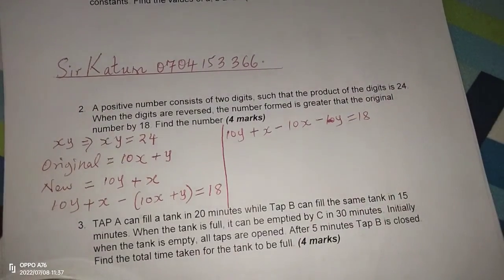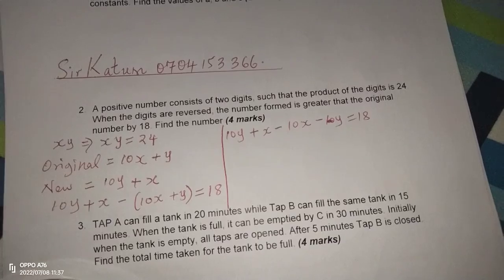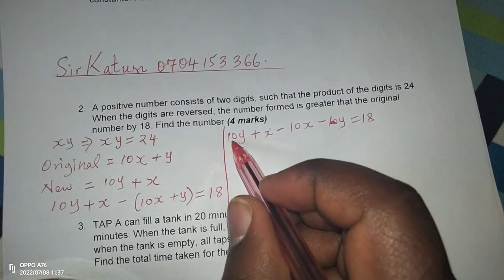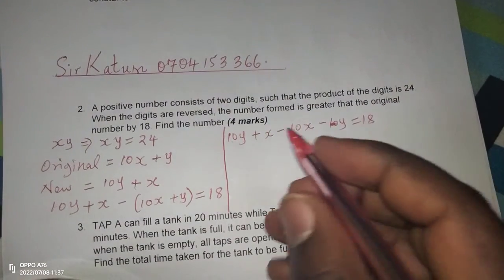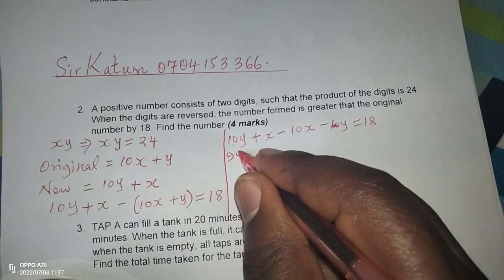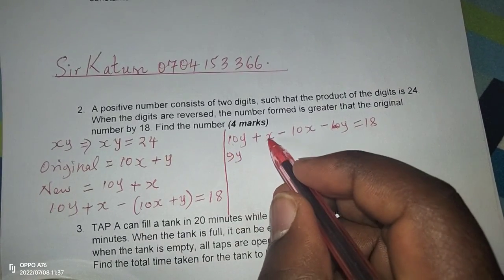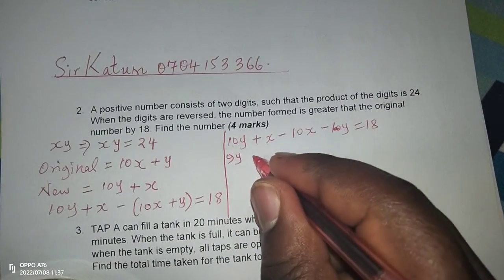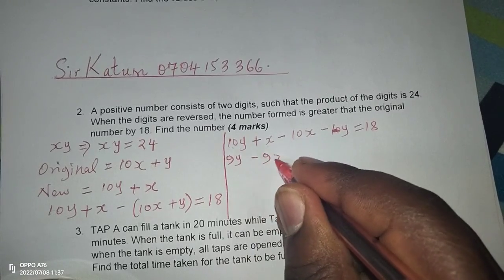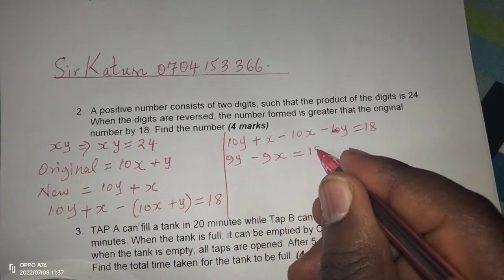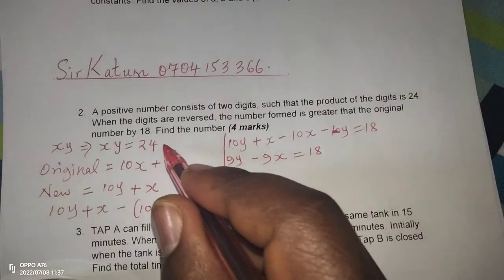So now we can group like terms together, whereby 10Y minus Y becomes 9Y, then X minus 10X becomes minus 9X equals 18.